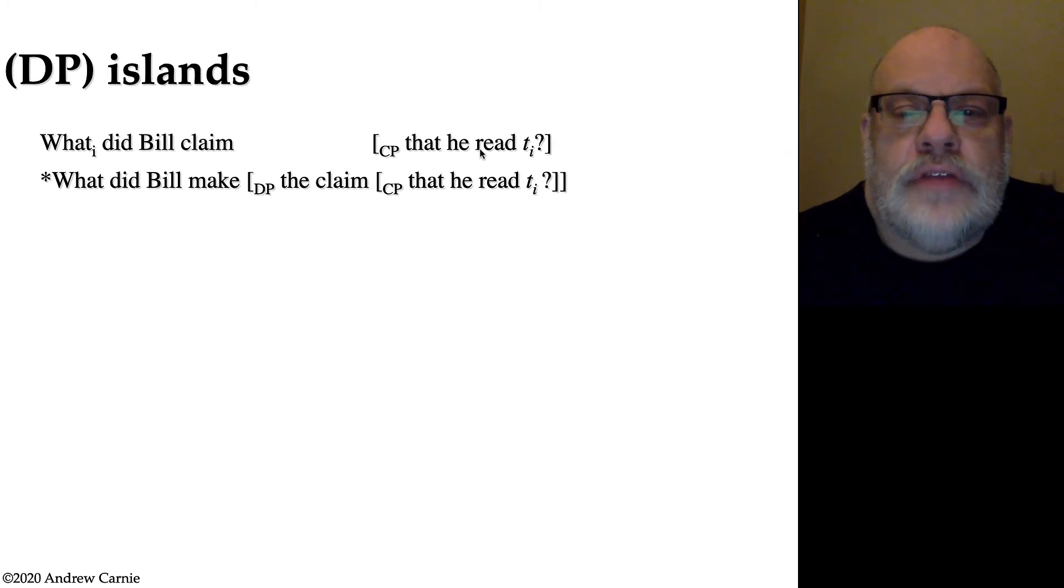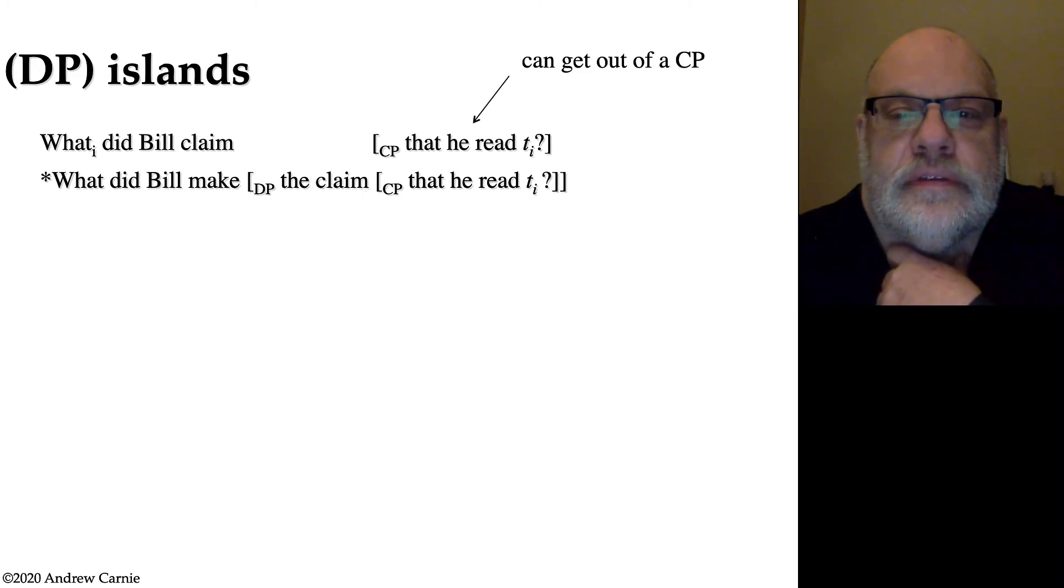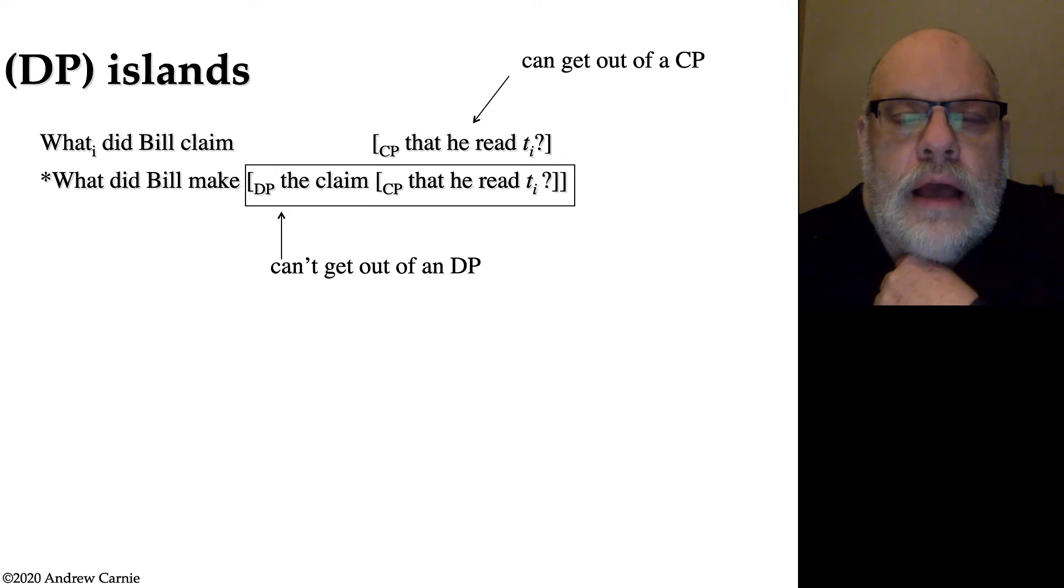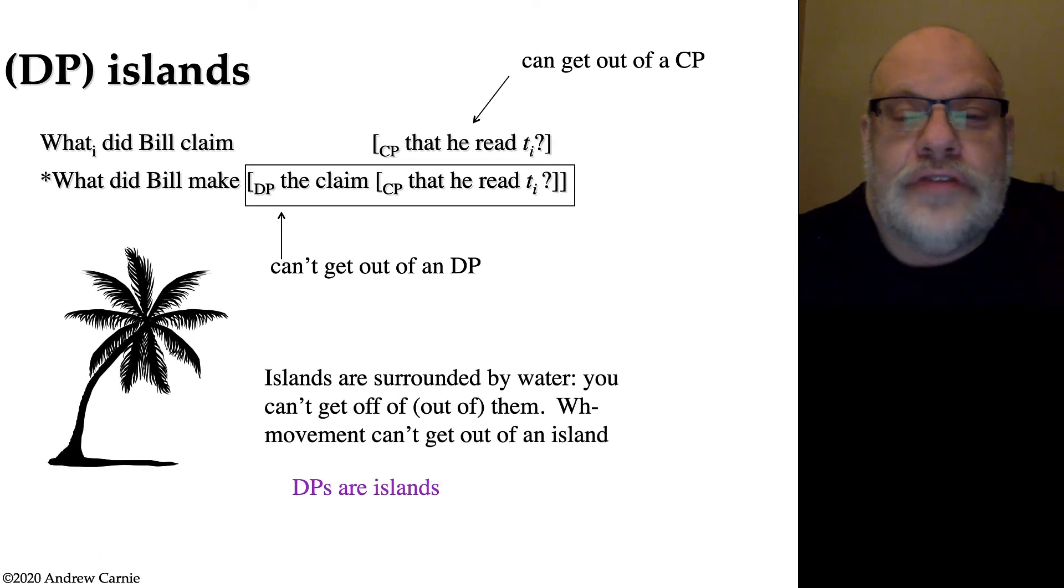So what's the difference here? The difference seems to be that you can do WH movement out of a clause when it is the complement of a verb, but you can't do WH movement out of a clause when it is the complement of a noun. This is our first instance of what we call an island. The island here is the DP. So DPs are structures you can't get out of by doing WH movement. The name island comes from the idea that when you're on an island, you're surrounded by water, and you can't get off of them or out of them. So WH movement can't get out of an island.